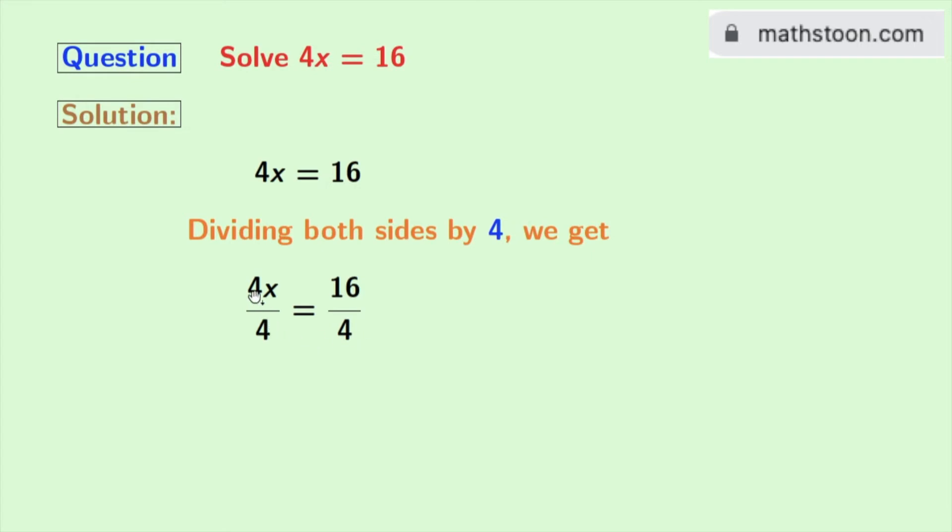Now look, the 4s get cancelled here. So we are left with x on the left hand side. And on the right hand side we have 16/4, which is 4.